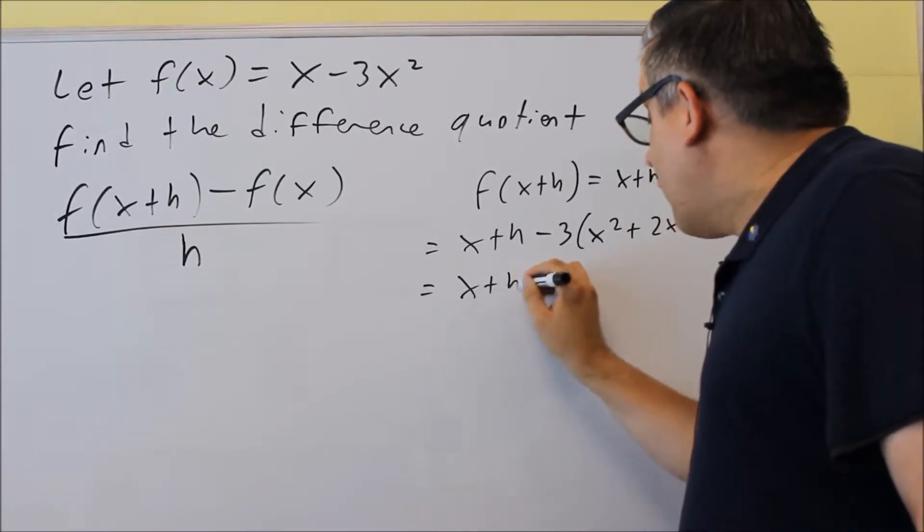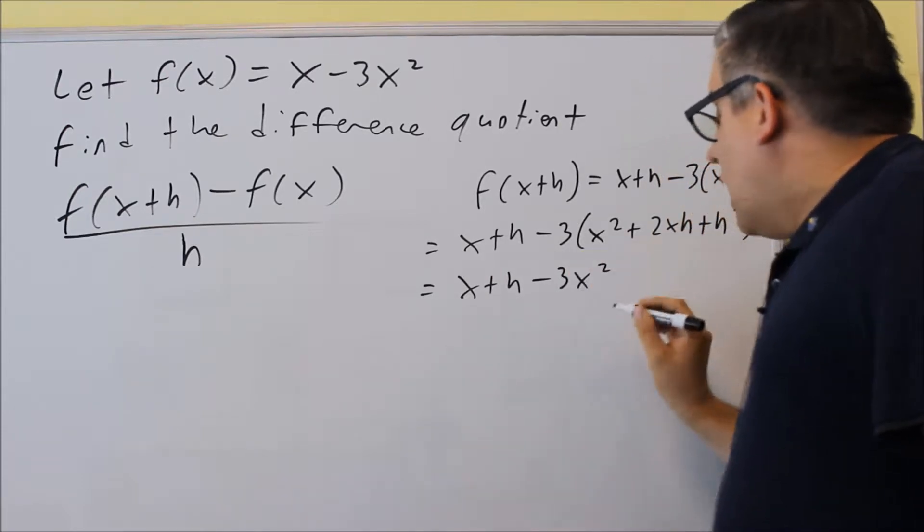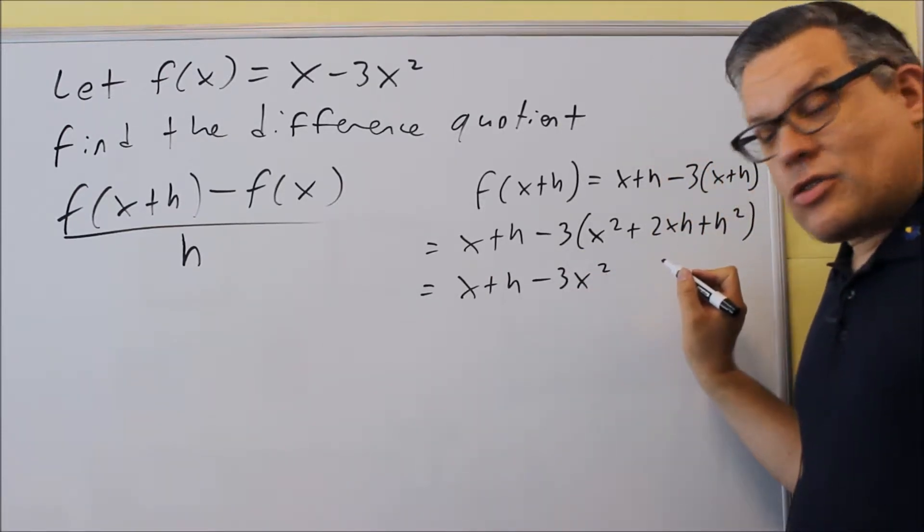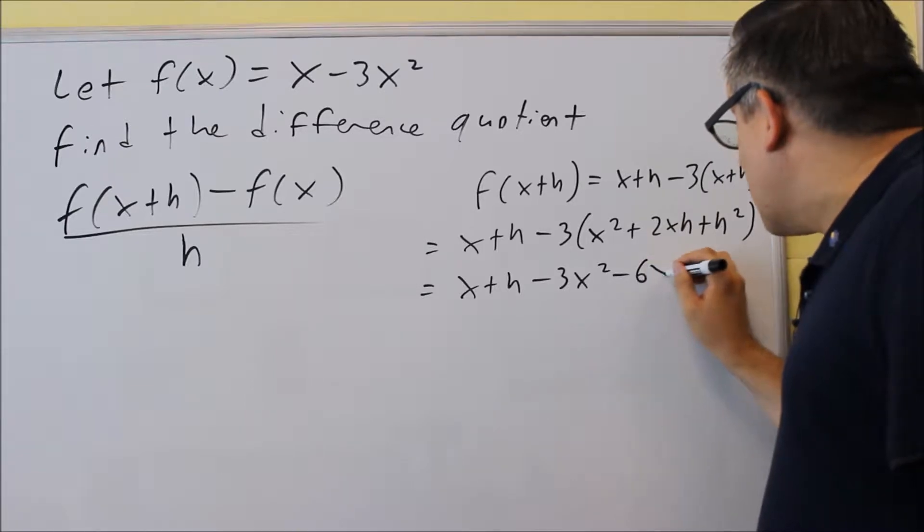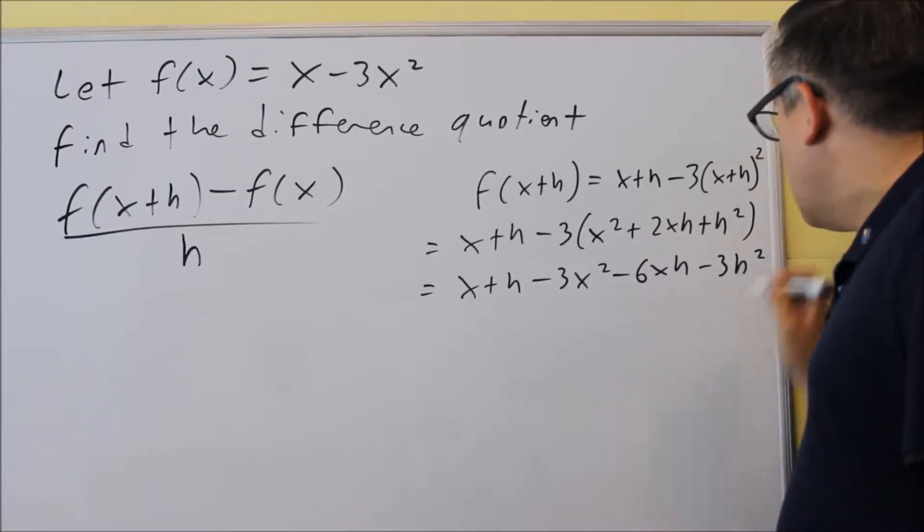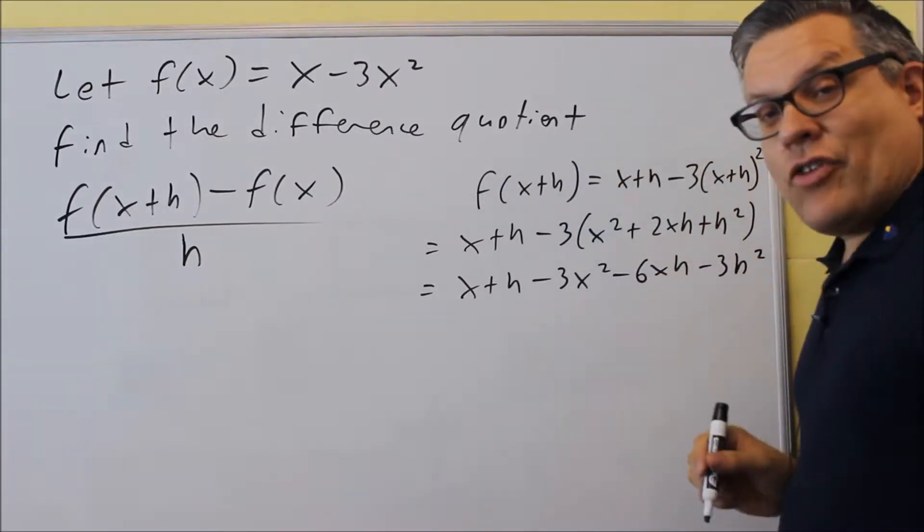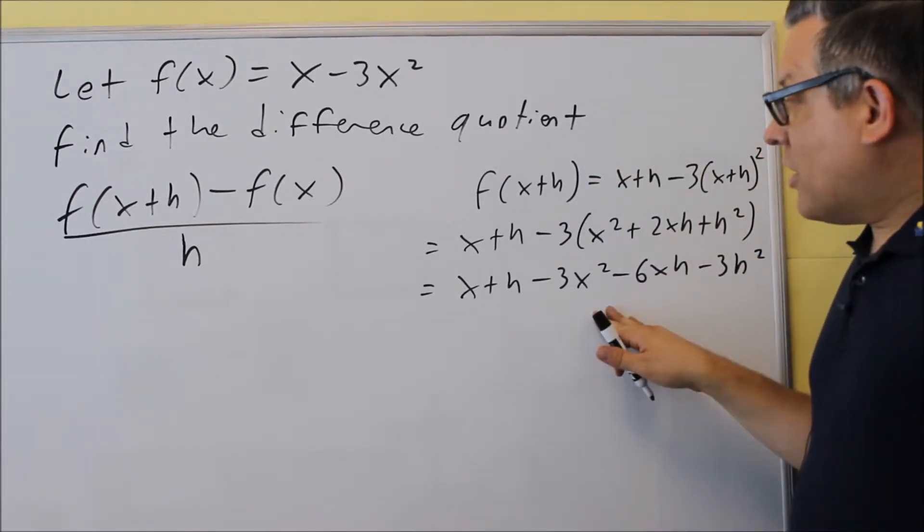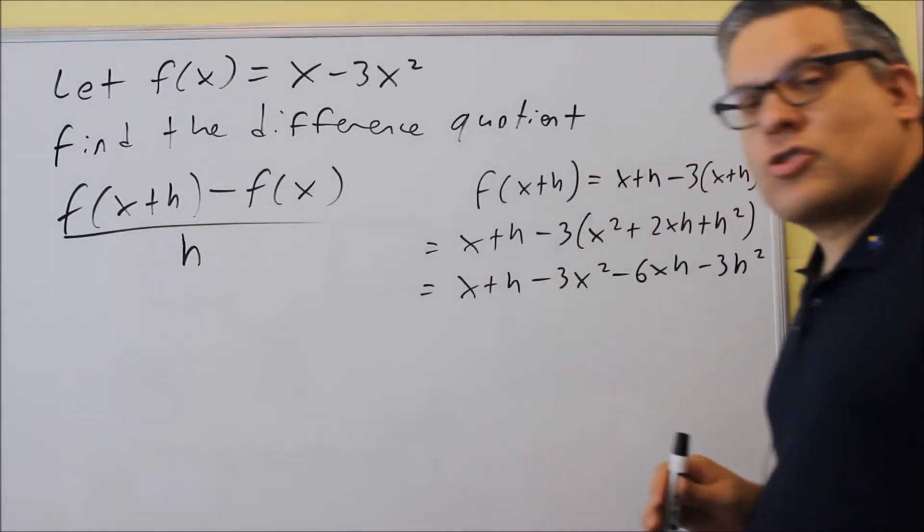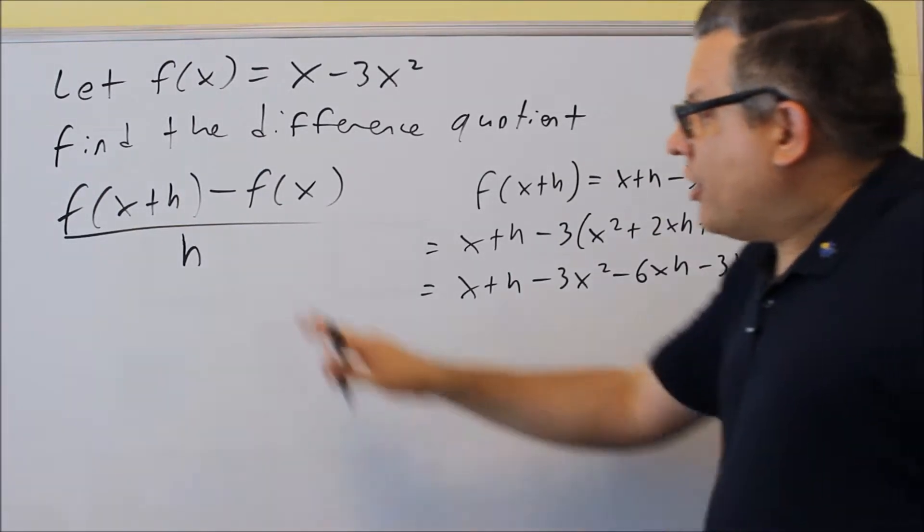And now that I've expanded it, I'm now able to distribute the -3. So -3 times x²+2xh+h² gives me -3x²-6xh-3h². This is actually going to be as far as I can go for f(x+h). So I'm going to take this, and we're going to go back to the difference quotient formula, and we're going to insert that.